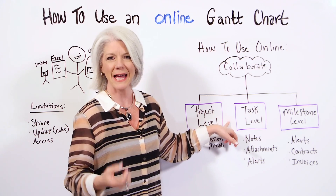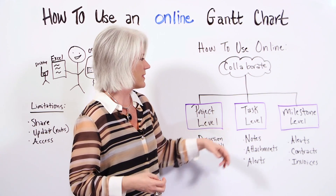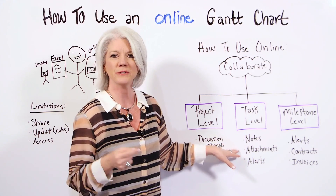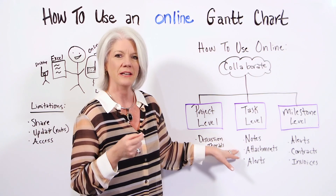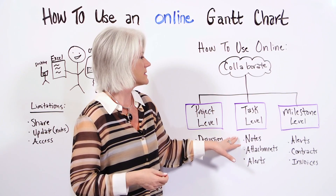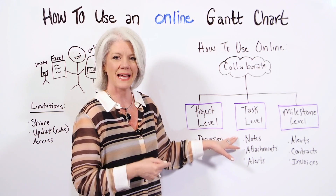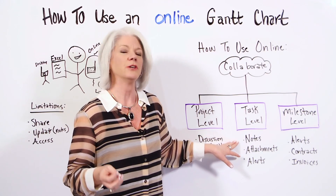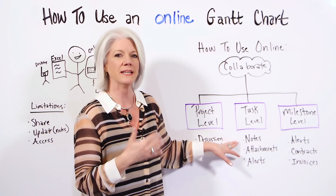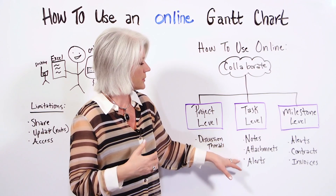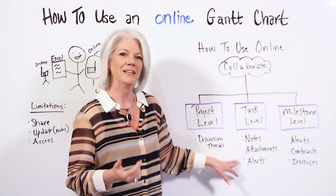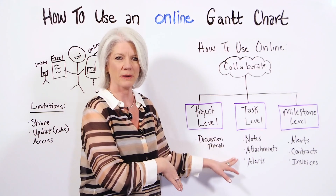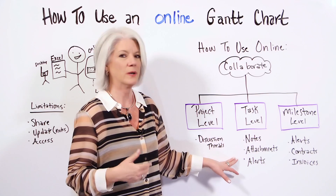The second level is the task level. Online, you can add notes and include different attachments to different tasks. For instance, if someone's working on requirements, you can attach the requirements document. If they're working on testing, you can include an attachment for test case scenarios. You can also include alerts — so if a task happens to be delayed, you can set up an alert, and you can also trigger an alert when it closes.